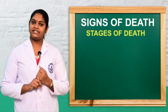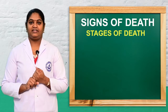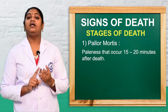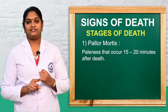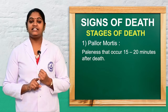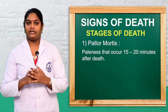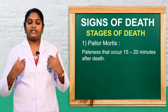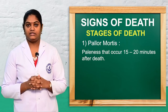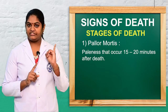Next we can discuss the seven stages of death. The first stage is pallor mortis. After death, there is a paleness in color between 15 to 20 minutes — the body color changes to a pale color. That is the first stage.